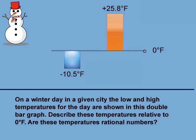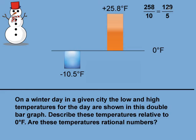The horizontal line represents zero degrees Fahrenheit. So this bar represents a temperature of 25.8 degrees above zero, and this temperature represents negative 10.5 degrees below zero. How do we know that these decimals are rational numbers? Going back to the definition of a rational number, 25.8 can be written as 258 over 10, which in simplest form is 129 over 5. Likewise, negative 10.5 can be rewritten as negative 105 over 10, which simplifies to negative 21 over 2. When a decimal can be written as a ratio of two integers with a non-zero denominator, then the decimal is a rational number.